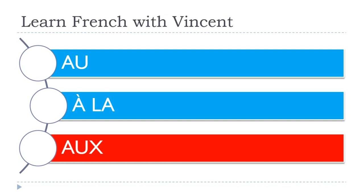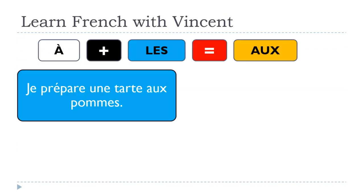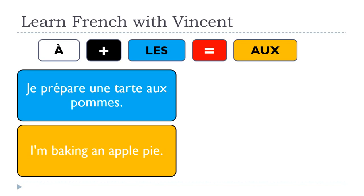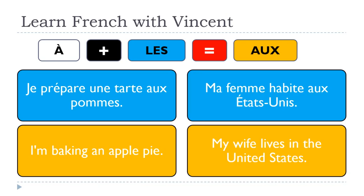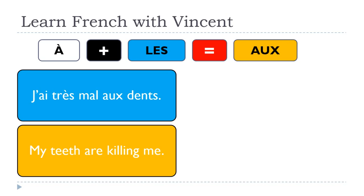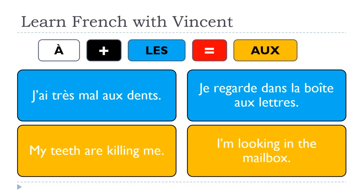Now let's see examples with the plural form AUX (A-U-X), pronounced 'O' unless followed by a vowel, in which case we make the liaison. 'Je prépare une tarte aux pommes' — I'm baking an apple pie. 'Ma femme habite aux États-Unis' — here we make the liaison: 'aux États-Unis'. 'J'ai très mal aux dents' — My teeth are killing me. 'Je regarde dans la boîte aux lettres' — I'm looking in the mailbox.